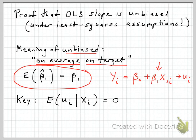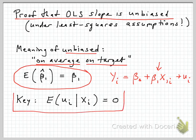I want to go through at least a sketch of the proof that the ordinary least squares slope in a simple regression is unbiased under our least squares assumptions. The key assumption is that the conditional expectation of the error term is zero, and what that really assures is that there's no systematic correlation between the error term — the left-out factors we don't control for in the regression — and the variable of interest, x1, that we're using as a regressor.